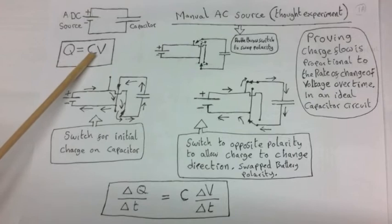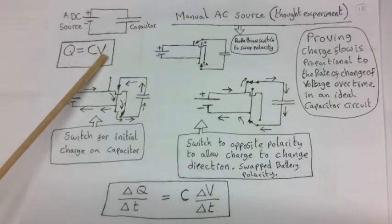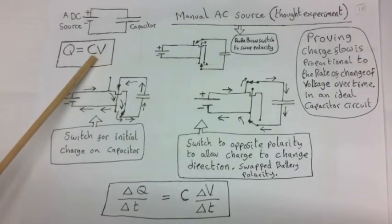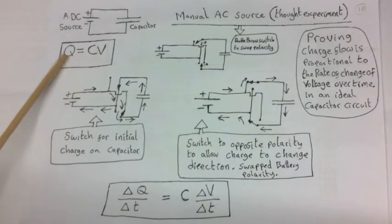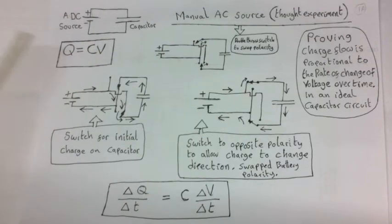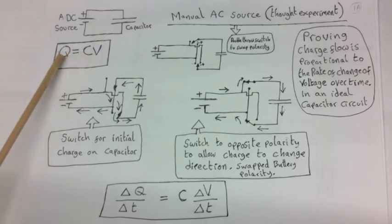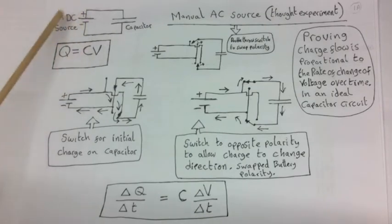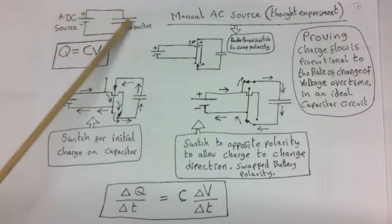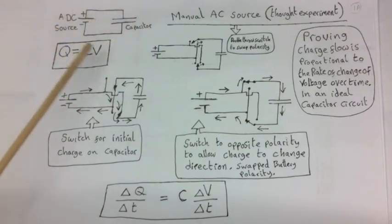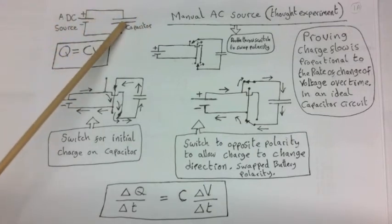Charge equals capacitance times voltage, so if you have a high voltage you can have more charge stored. If you have a higher capacitance — in other words, bigger plates — you're going to have more charge stored. With a DC voltage in a simple DC capacitor circuit, once the capacitor is charged up, nothing much else happens.